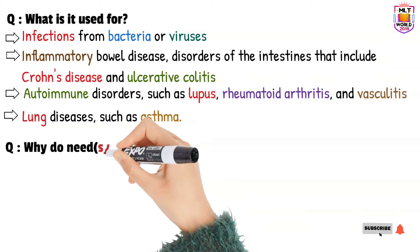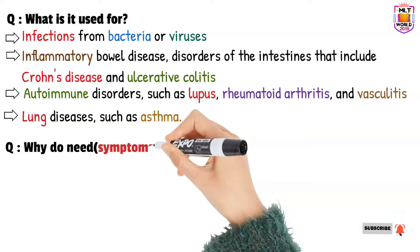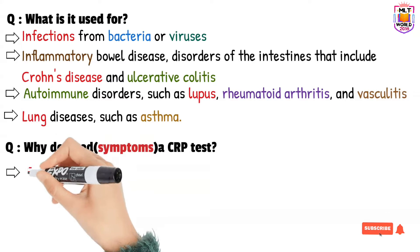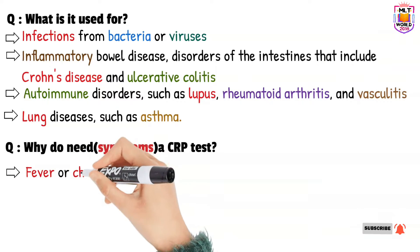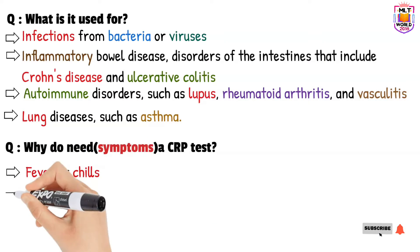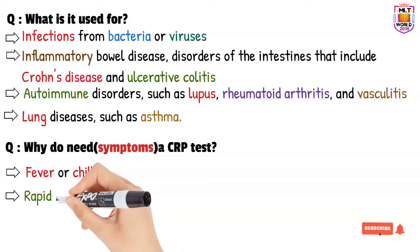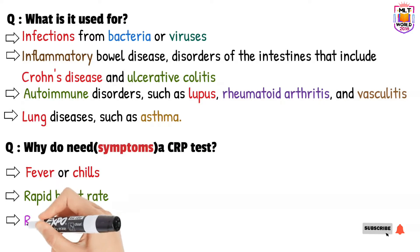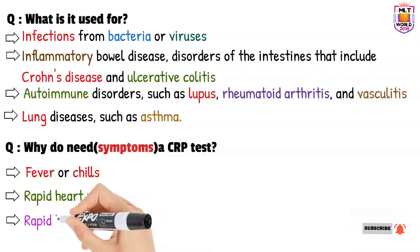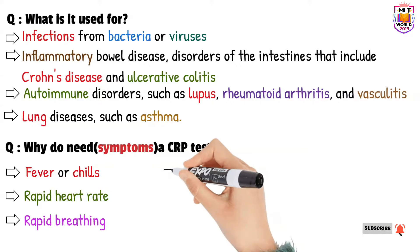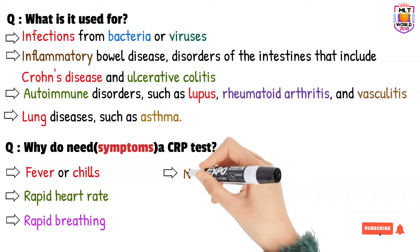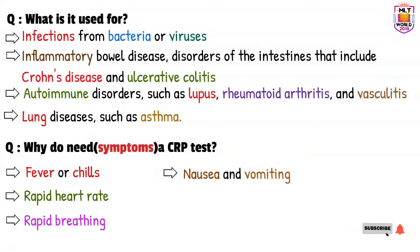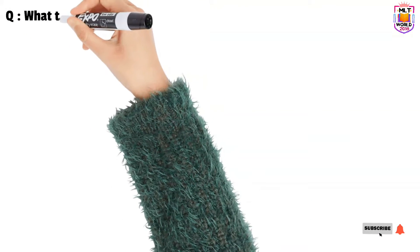The next question is: why do we need a CRP test, or what are the symptoms that indicate the need for it? Symptoms include fever or chills, rapid heart rate, rapid breathing, and nausea and vomiting.